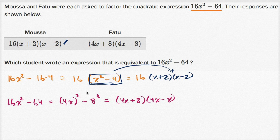Once again, if this last step doesn't make a lot of sense, I encourage you to watch the video on factoring difference of squares, where we'll go a lot more into the intuition of it. But when you see it this way, you realize that Fatou also got an expression that is equivalent to 16x squared minus 64.